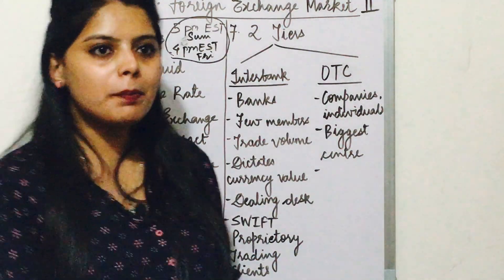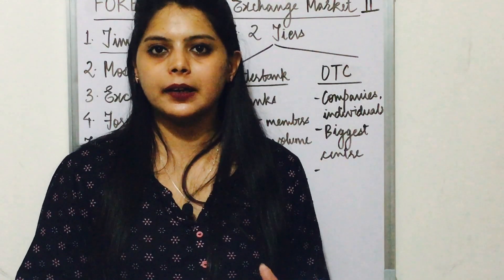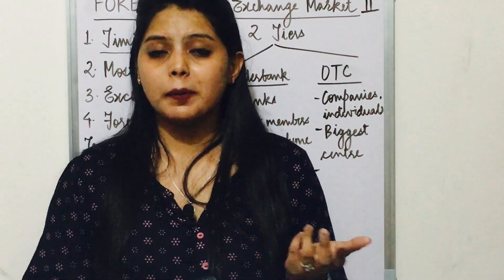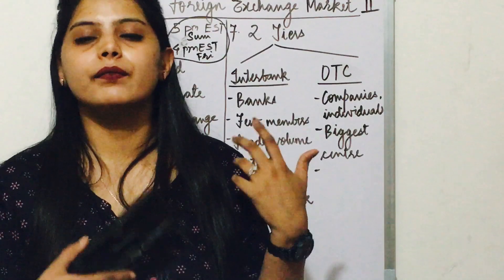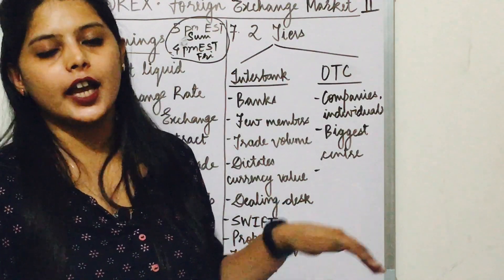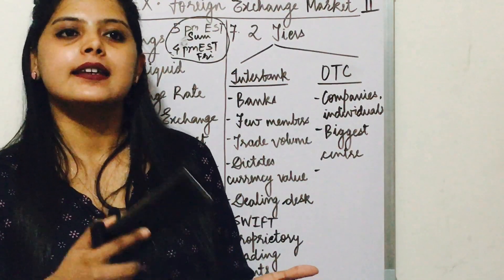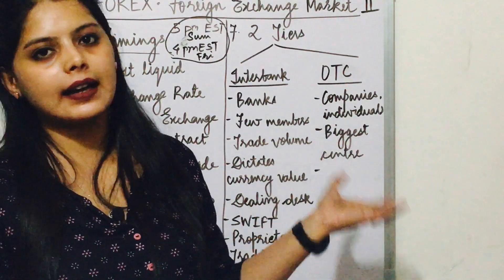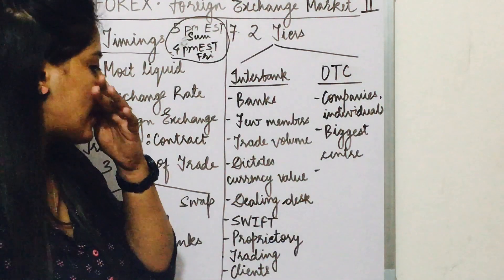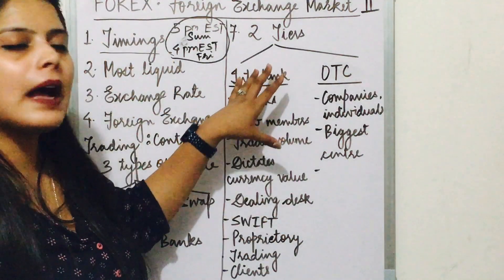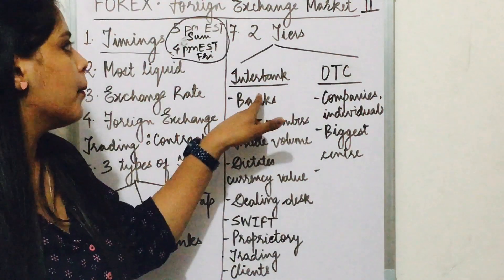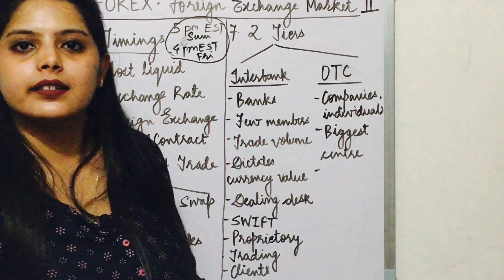Next is proprietary trading. Banks do foreign exchange trading for themselves or for their clients. Their clients can be governments, corporations, wealthy businessmen, or wealthy customers. The banks will trade foreign exchange for themselves and will act as a dealer, executing transactions for their clients.